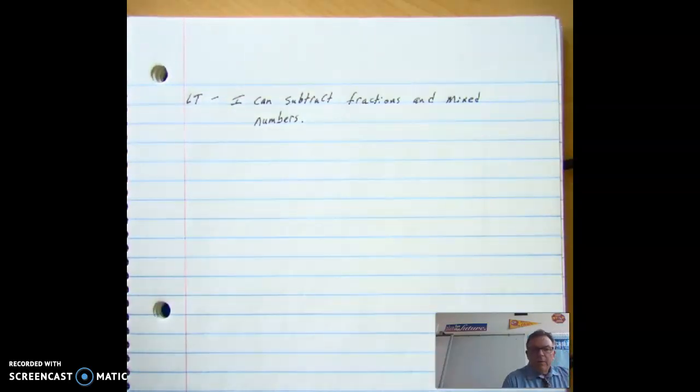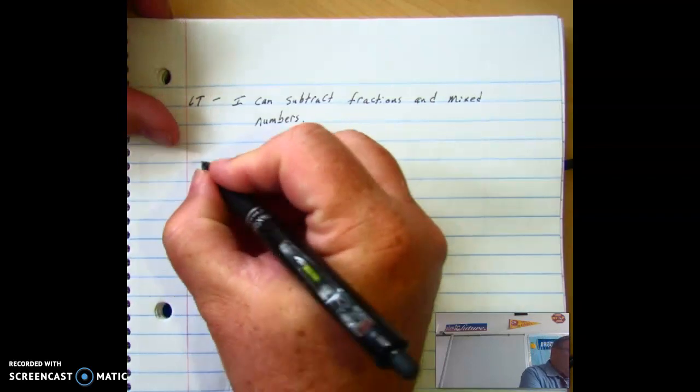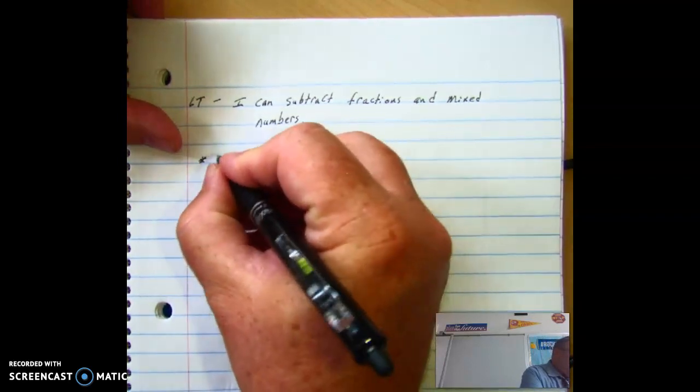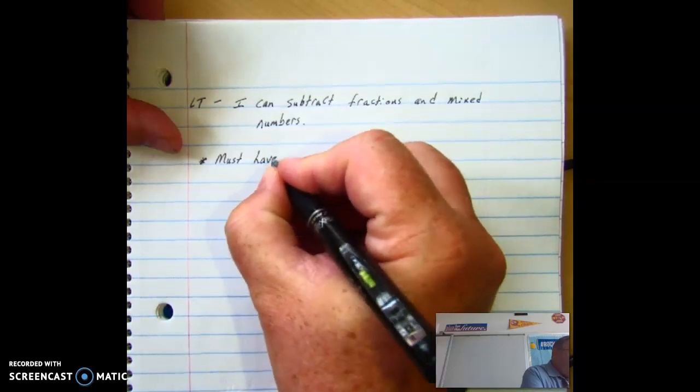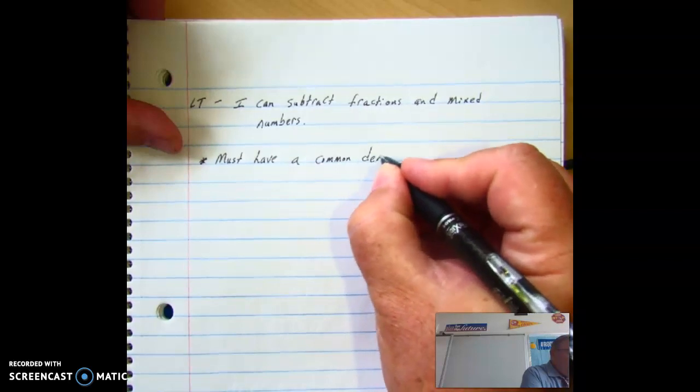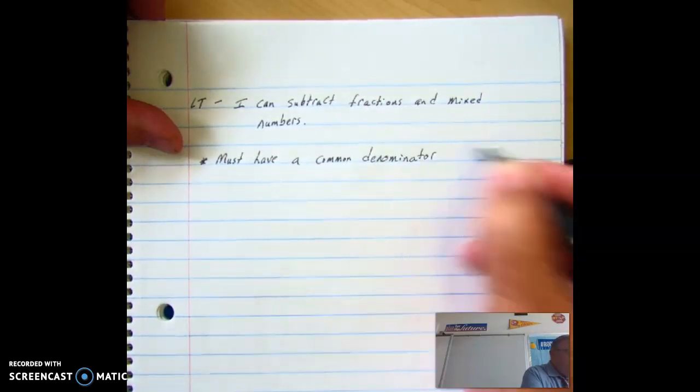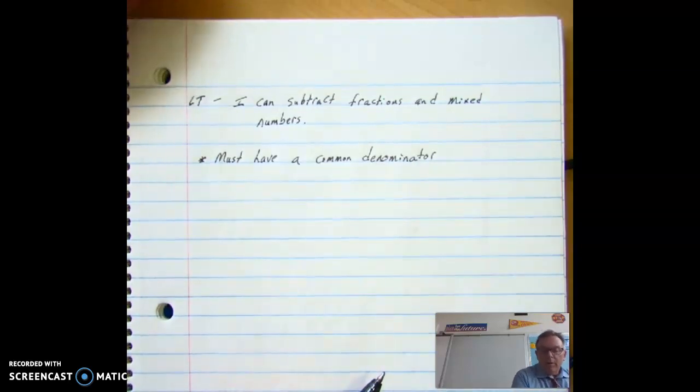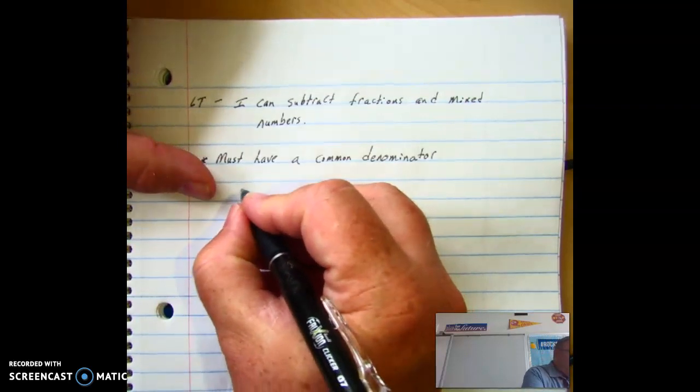All right, so we're going to go ahead and do a couple examples real quick. Just like you learned with addition of fractions, you must have a common denominator. All right, so we're going to go ahead and we're going to start with a simple one to three, and we'll do mixed numbers first.